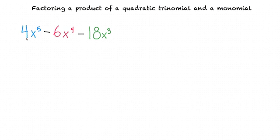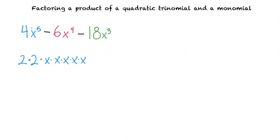The prime factorization of 4 is 2 times 2, because those two prime numbers multiply to equal 4, and that's the only set of prime numbers that will multiply to equal 4. This x to the fifth power can be written as x times x times x times x times x. Here we've expanded our first term. Let's do that to the other two terms.